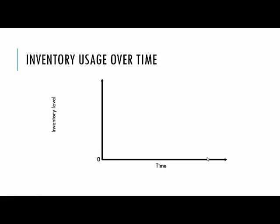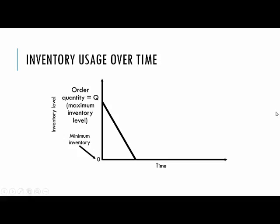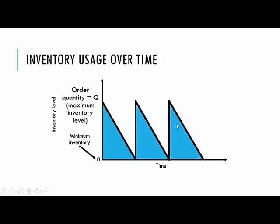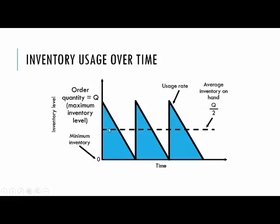Inventory usage over time for an EOQ model starts at some maximum quantity Q and decreases at a smooth, linear rate because demand is known and constant. It goes down to zero — no stockouts — then we order more, and it jumps back up. This creates a sawtooth pattern that repeats over time. The average inventory on hand is Q over 2, which you can verify mathematically or visually from the sawtooth diagram. We'll see Q/2 again shortly.